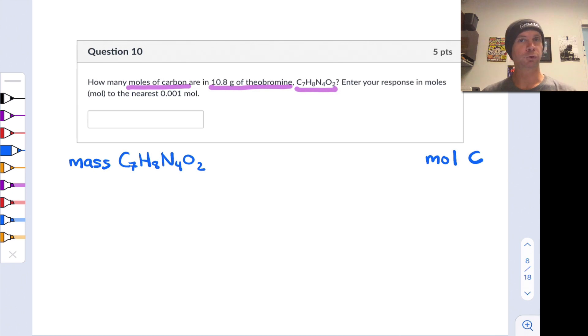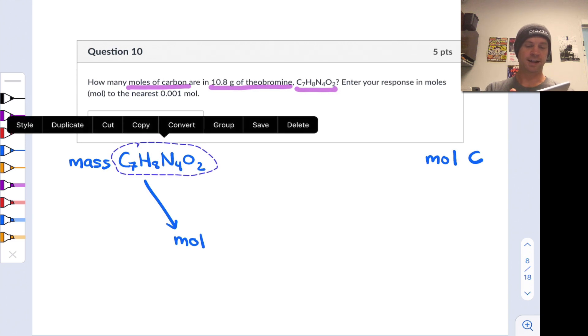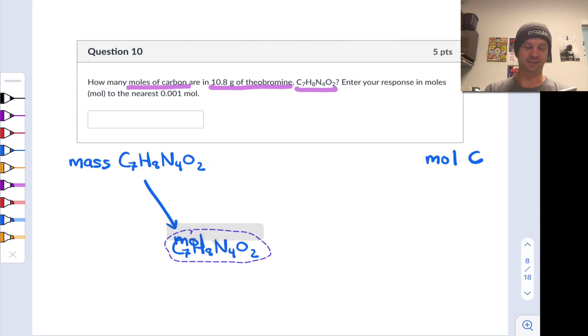How do I get from point A to point B? Well, can't go directly from mass of the compound to moles of an element. I have to get myself into moles of the compound first. So we have to go from mass to moles of theobromine, and I'm just gonna copy that molecular formula to save myself a little bit of time. Once I know the number of theobromine molecules in my sample is one way to think about the moles of theobromine, I can infer the number of carbon atoms in the sample by thinking about the molecular formula and the number of carbons within it.